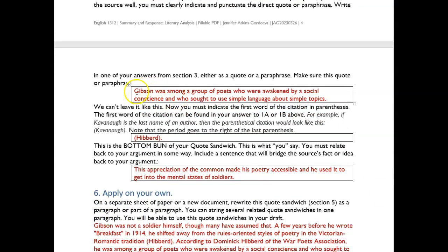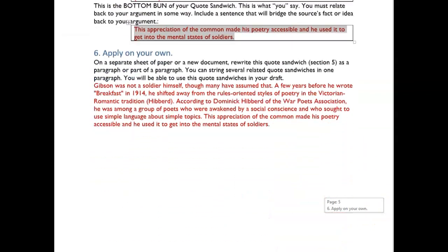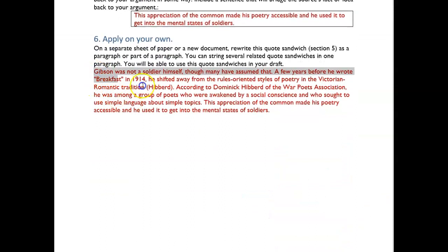Here's my paraphrase. Gibson was among a group of poets who are awakened by a social conscience and who sought to use simple language about simple topics. And then I have to have my direct citation, which would be the author's last name. I have to have that in my parenthetical citation, Hibbard. And now I bring it back. My bottom bun brings the source, brings the story back to my own perspective. And when we put it all together, this is how it looks.